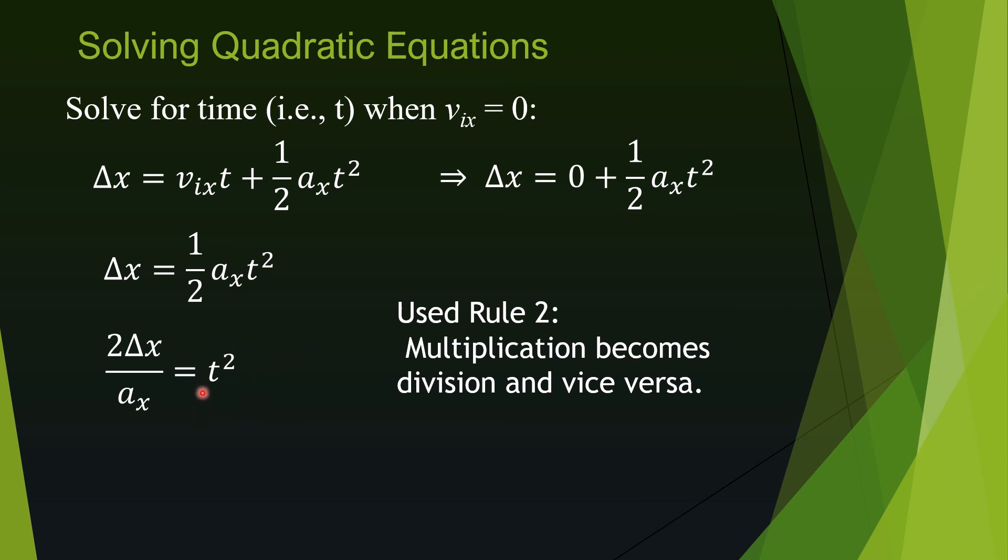Now to get t, we need to take square root. But we cannot just take a square root on one side. We have to take square root on both sides to keep the equation balanced or equal. So after taking square root, t squared is simply t. And the other side has square root on everything. And there is also positive and negative sign indicating that being square has two possible solutions.